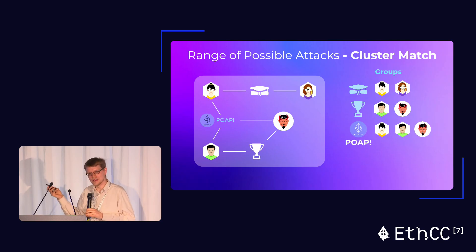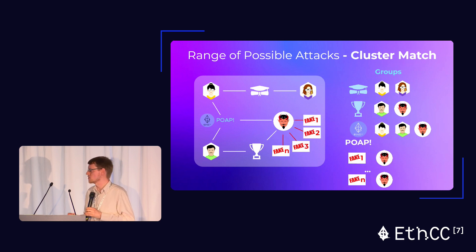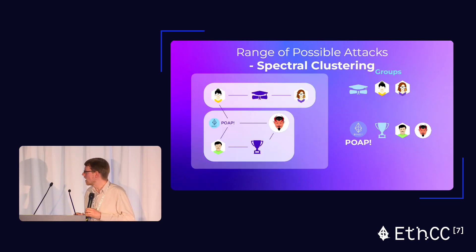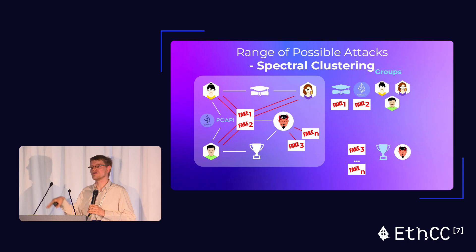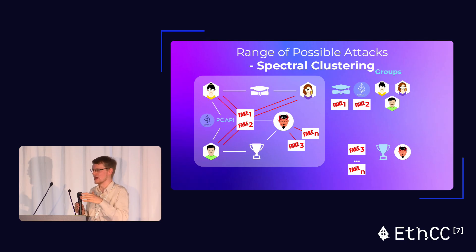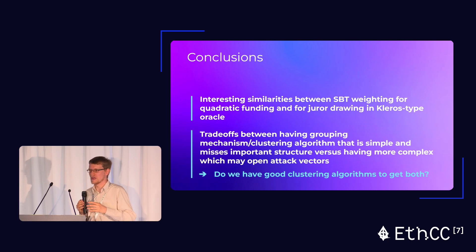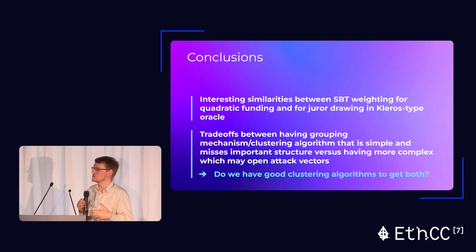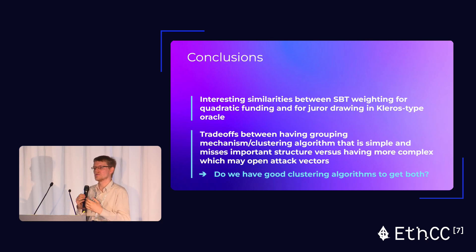I've done a lot of research recently to analyze different attacks on different clustering algorithms. You can ask: what happens if the attacker gives themselves a bunch of fake Soulbound Tokens? They might also try to give fake Soulbound Tokens to others to collapse their groups — so that what were distinct groups before are now grouped together, and the attacker is isolated by themselves. Simulations suggest that trying to give other people fake Soulbound Tokens to collapse their groups is less effective than just giving yourself Soulbound Tokens. You can come up with theorems showing the best attack in some clustering algorithms, and calibrate the security of your system for that worst-case attack.